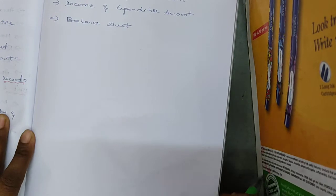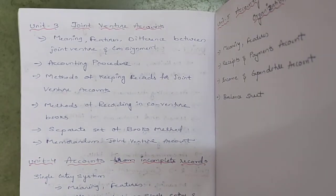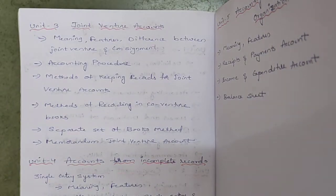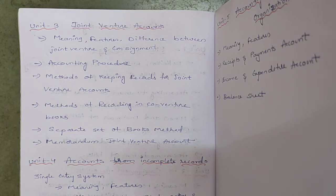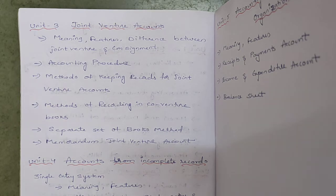Unit 3 is Joint Venture Accounts. Under joint venture accounts we have: meaning, features, difference between joint venture and consignment, and accounting procedure. For methods of joint venture — how to maintain records — we have three methods: methods of recording in co-venture books, separate set of books, and memorandum joint venture account.